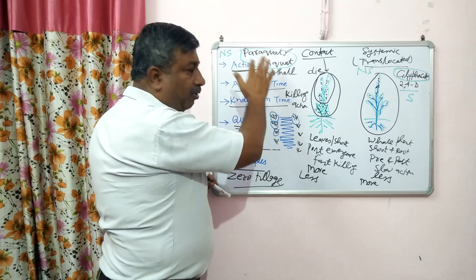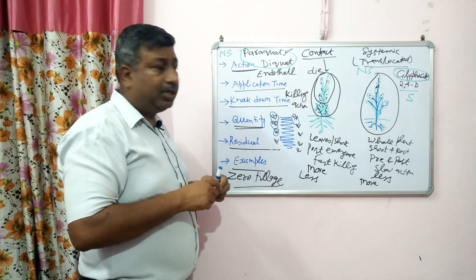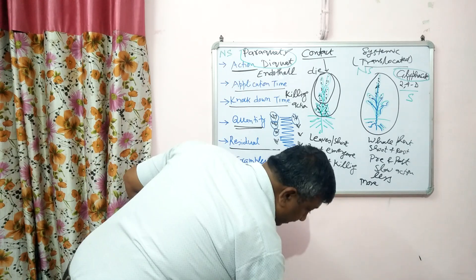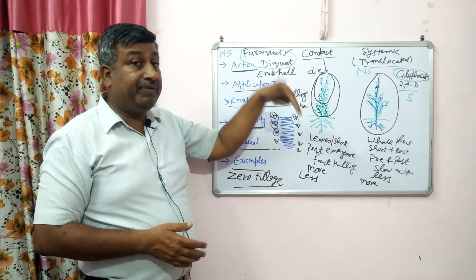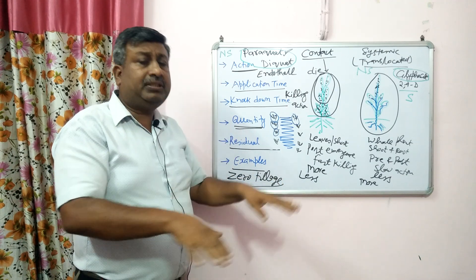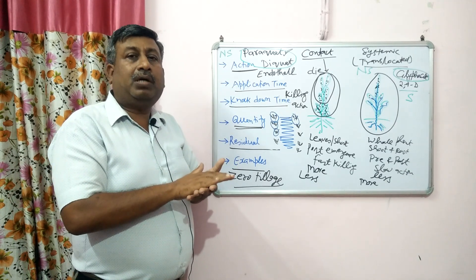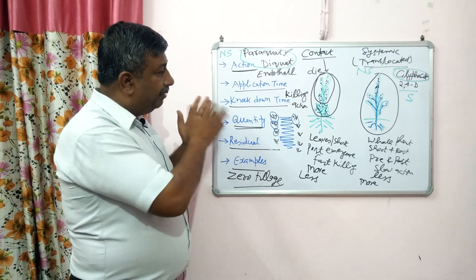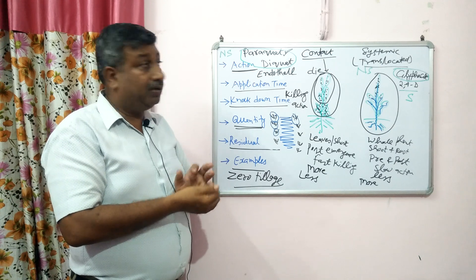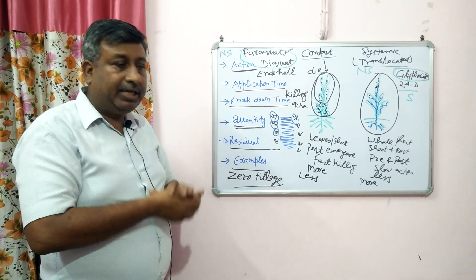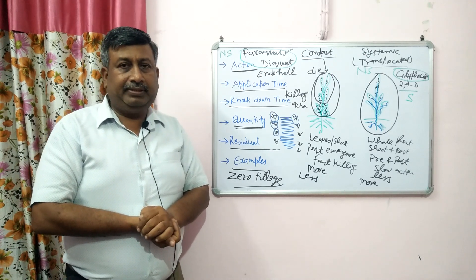Non-selective herbicides: paraquat, diquat, and glyphosate. Contact herbicides: paraquat, diquat, and endothall. Most herbicides available in the market are selective and systemic. The contact vs. systemic distinction is based on herbicide mobility in the plant — if it is translocated, it is systemic; if it remains as such on the leaf, it is a contact herbicide. Contact herbicides are very good in minimum tillage or zero tillage systems where immediate killing and less residual effect are required. Thank you very much.